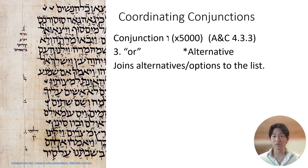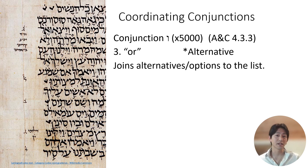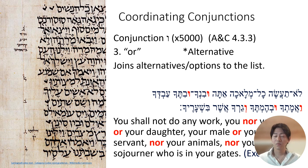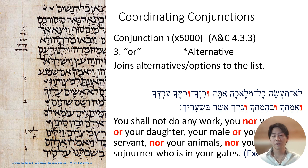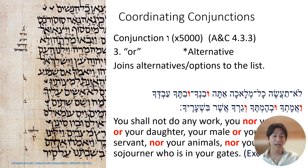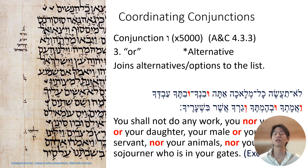Another important use of vav is with the connotation of 'or' — it introduces an alternative, joining alternatives and options to a list. For example, in the passage commanding no work on the Sabbath: 'You shall not do any work' — the list continues adding alternatives: neither you, nor your sons, nor your daughters, and so on. Anyone in the list is not supposed to be doing work. Here 'or' or 'nor' is the most appropriate way to translate the vav.